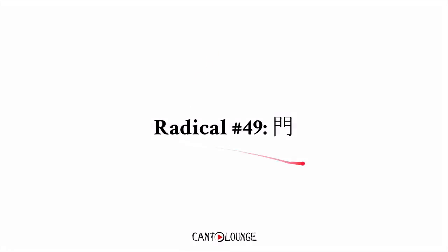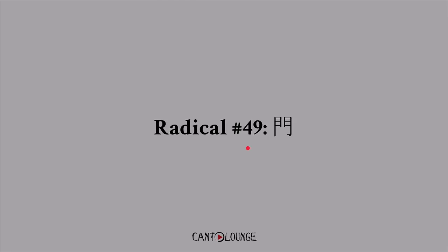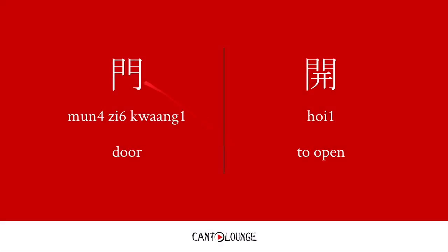And radical number 49: 門, meaning door. 門字框 — 框 meaning frame, so it encloses. The frame that encloses, like a door — you can see it encloses this little bit inside. For example, 開, meaning to open.